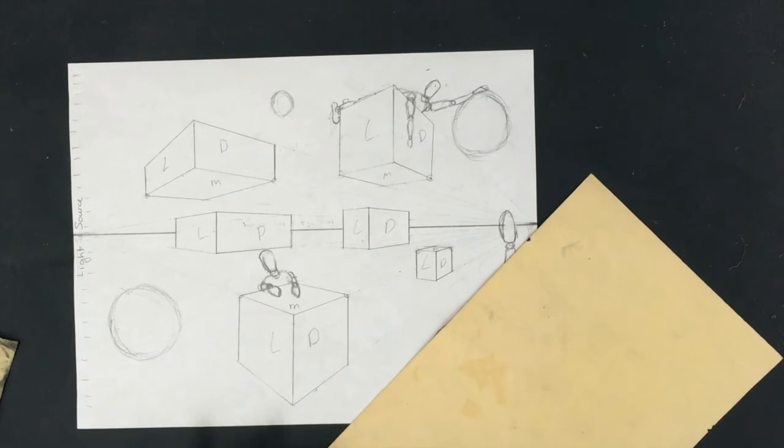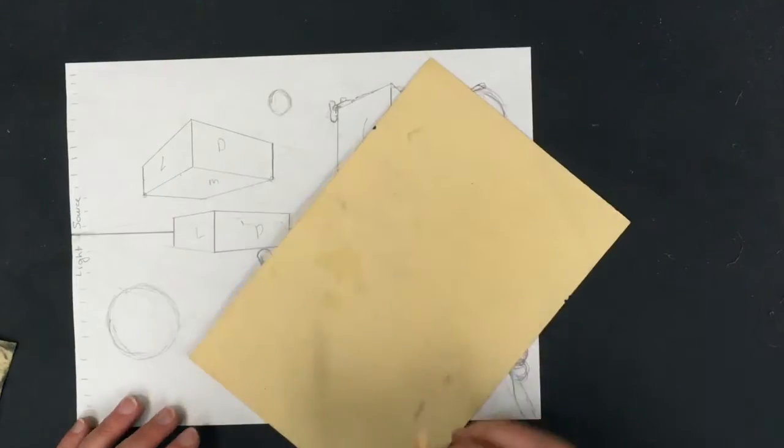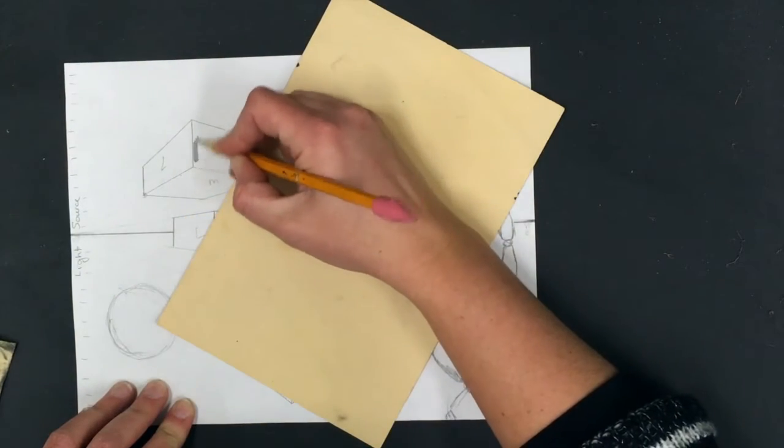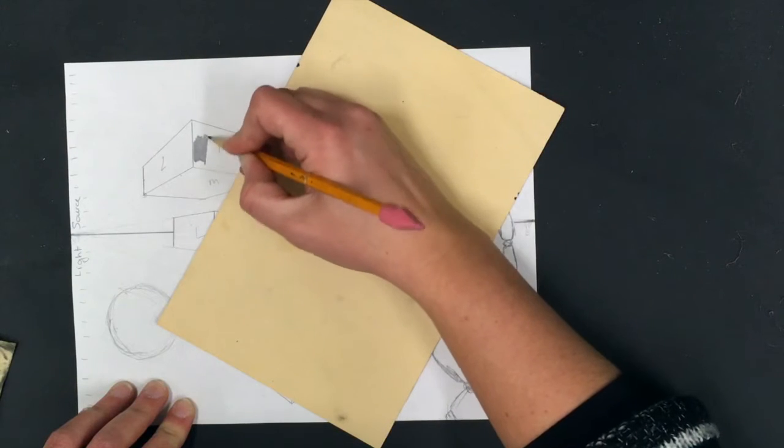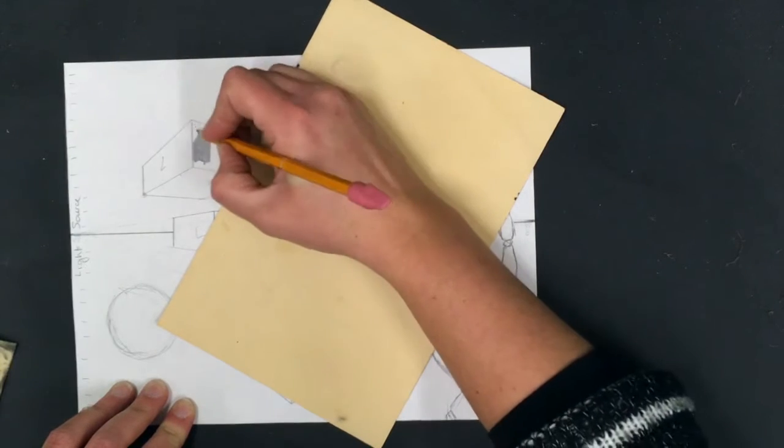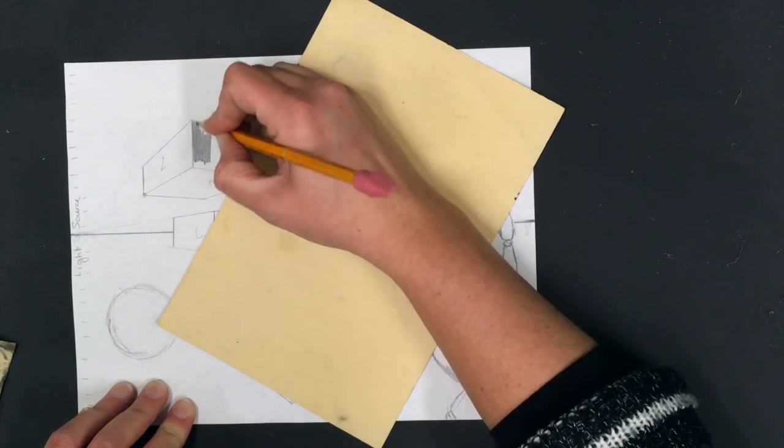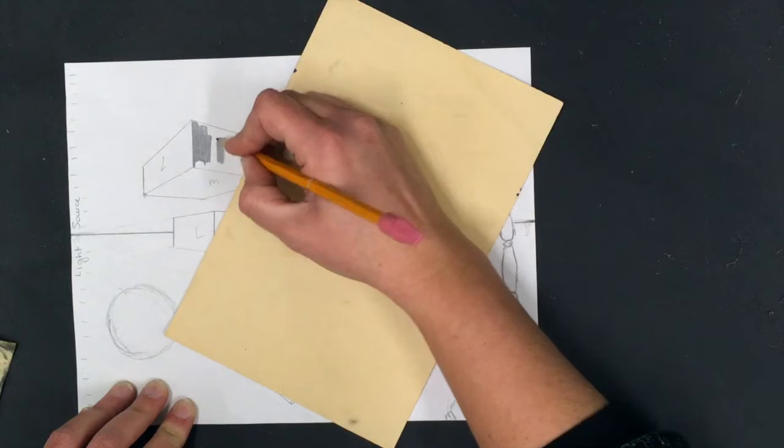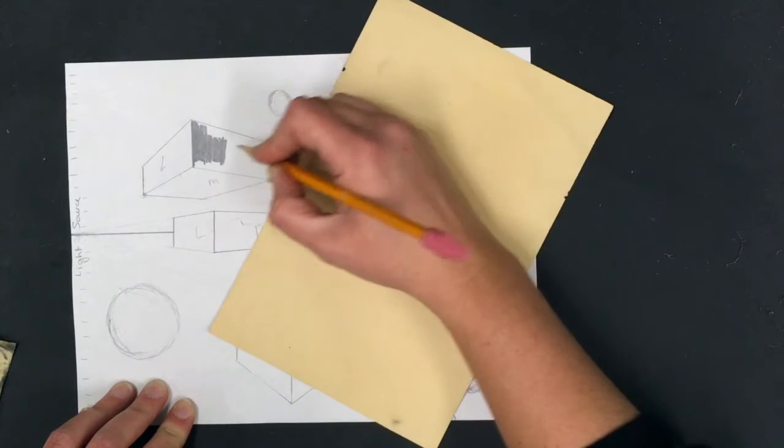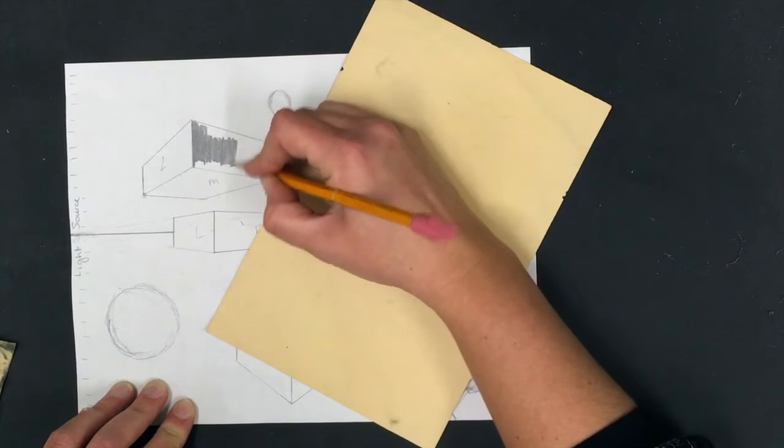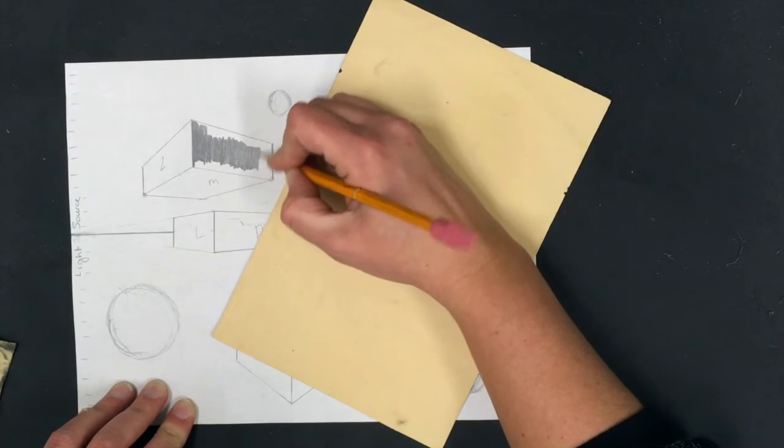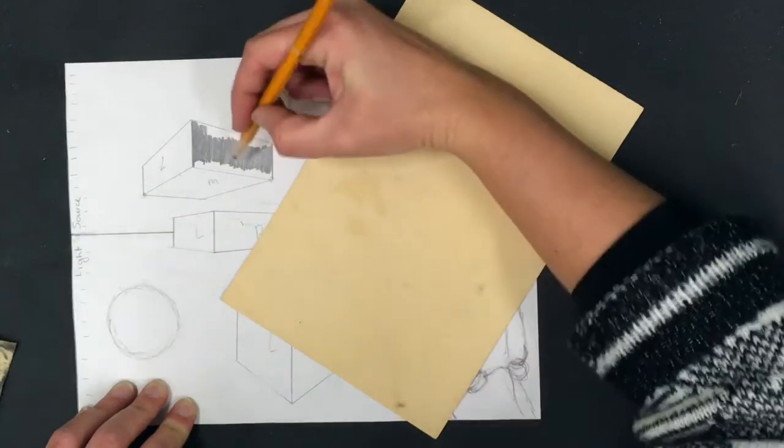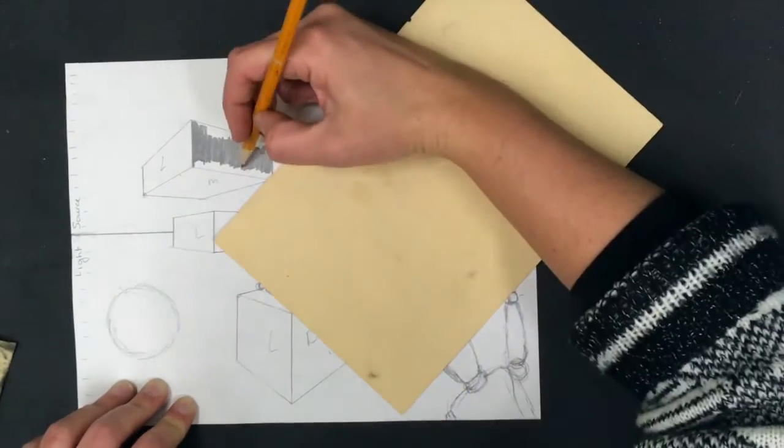Let's start with our darks only - the dark sides of the boxes. Nice heavy pencil pressure, firm. It doesn't have to be the darkest pencil pressure you've ever used, but you do want firm pencil pressure and you're gonna shade in the dark value side of your box.